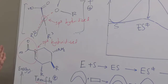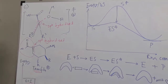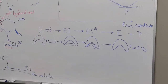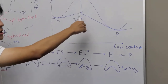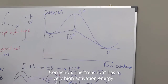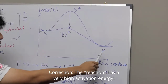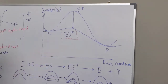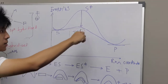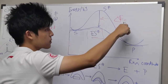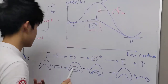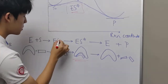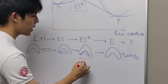To understand how having a similar structure to the transition state makes this a very good inhibitor, let us recall our enzyme catalysis theory. Essentially, the enzyme lowers the energy of the transition state. In the normal reaction, the substrate has a very high activation energy to produce a product. The enzyme stabilizes the transition state through the enzyme-transition state complex and therefore lowers the activation energy.